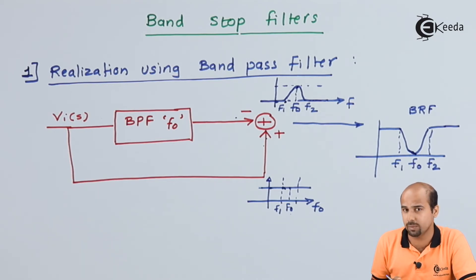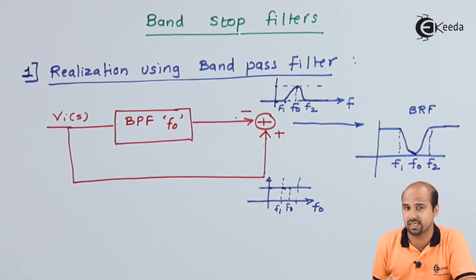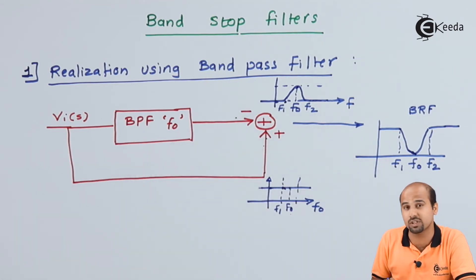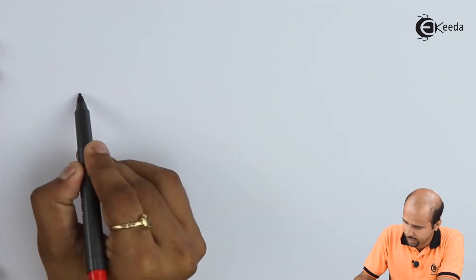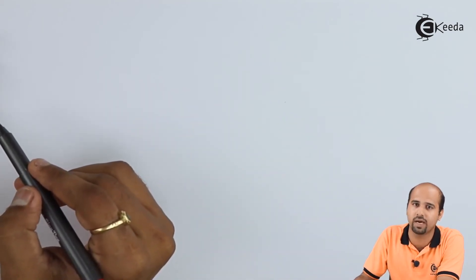The actual implementation of the band reject filter can be easily done using the narrow band pass filter circuit combined with a subtractor circuit. This subtraction is achieved using an inverting amplifier circuit. We will draw the realization using the narrow band pass filter first and then the amplifier.